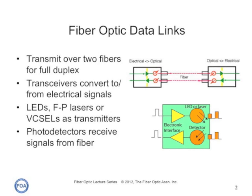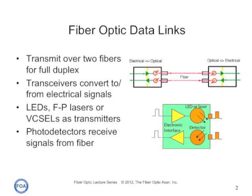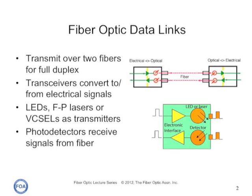Some systems, like fiber-to-the-home passive optical network systems, use one fiber bi-directionally, using wavelength division multiplexing.